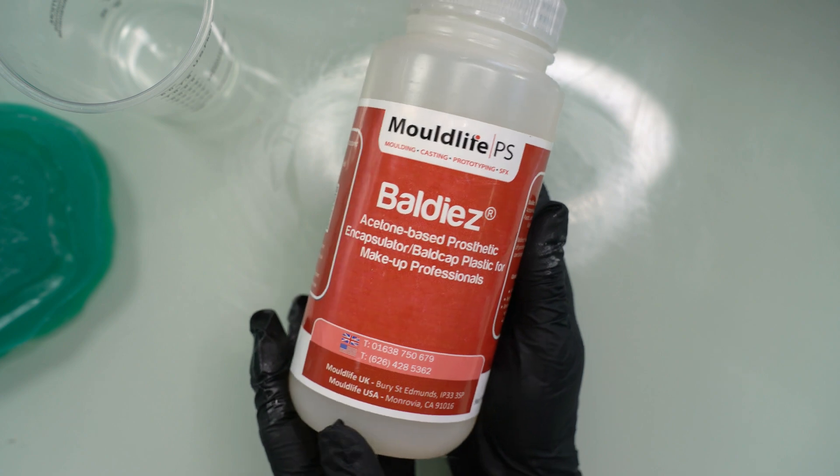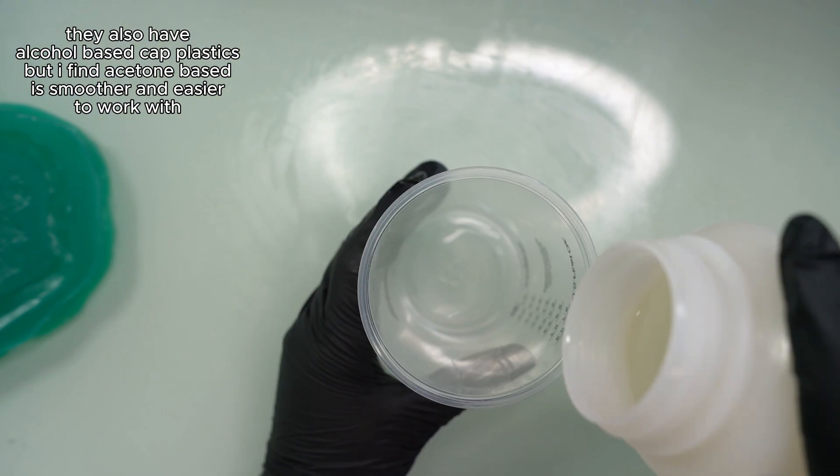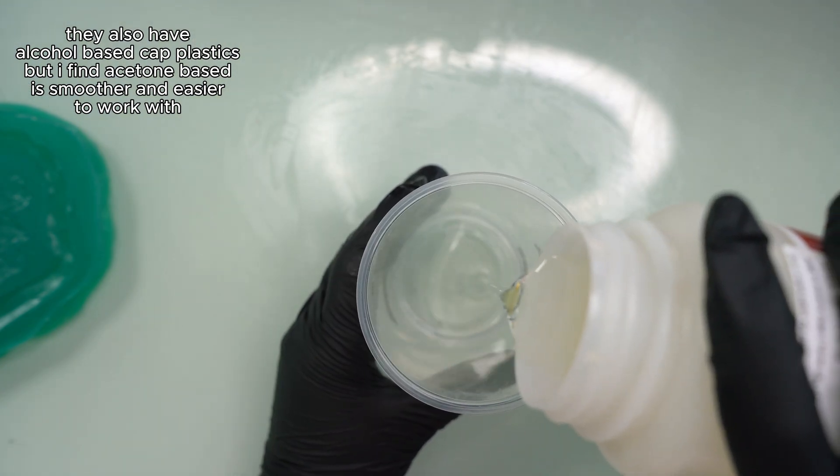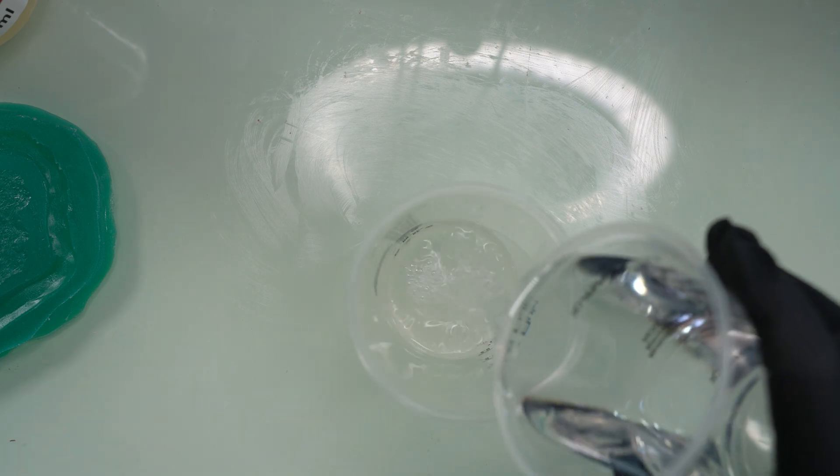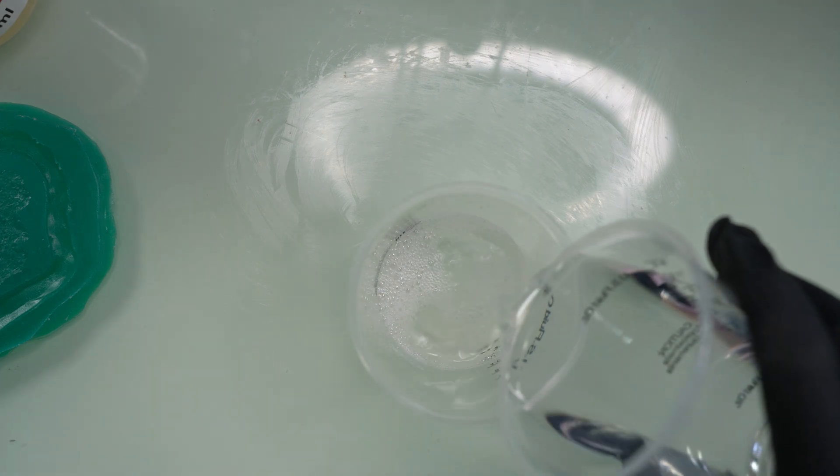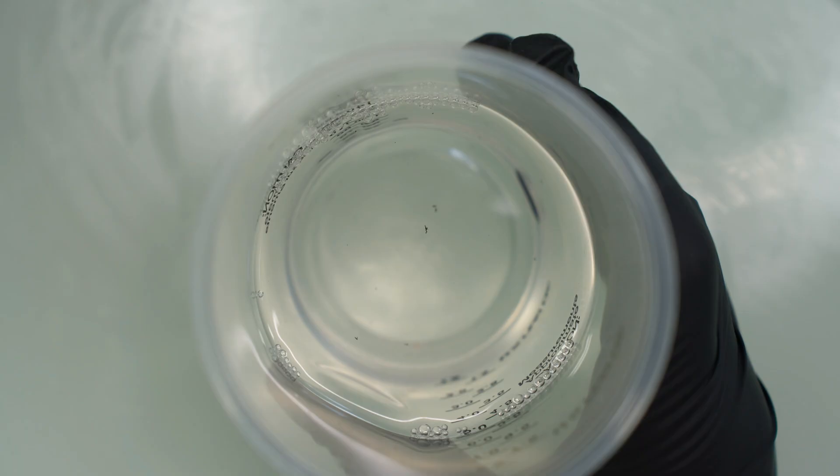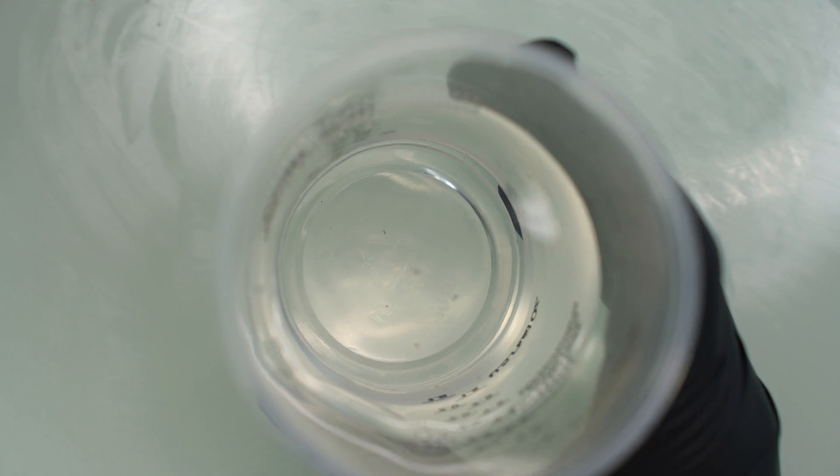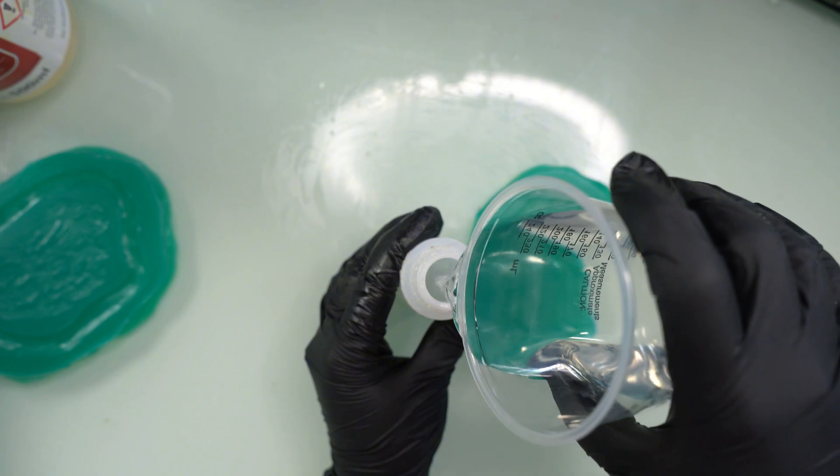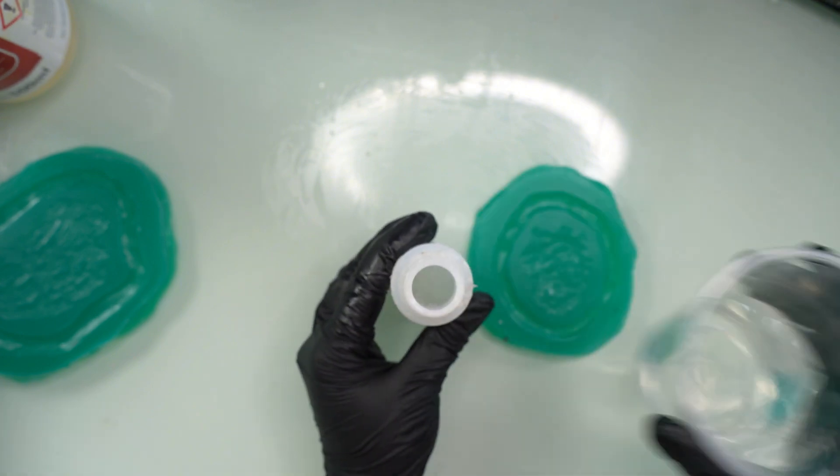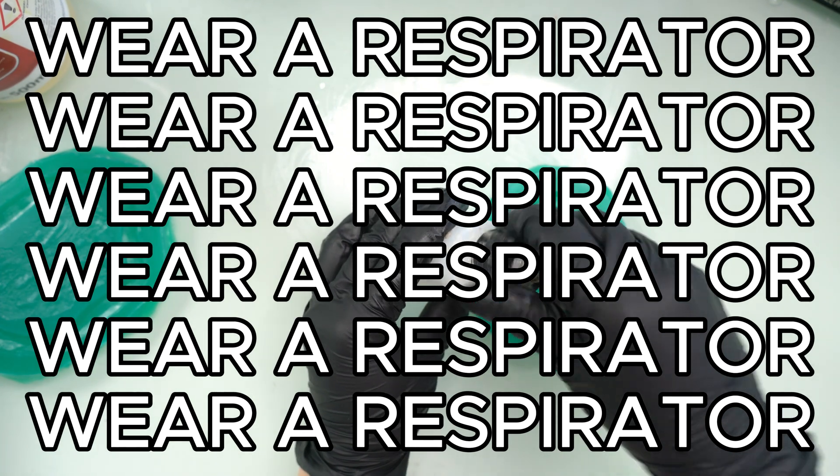Now for the cap plastic, this is Baldi's by Mold Life. It is an acetone-based cap plastic. I'm doing about a 1 to 8 ratio of cap plastic to acetone, but I usually just eyeball it, honestly. You'll want the consistency to be liquidy, but still have a slight color tint and some little swirlies in it. Not the black swirlies. I don't know what that is. Probably should have cleaned that out, but usually a 1 to 8 ratio is a good starting point and then you can either add more cap plastic if you need it or add more acetone.